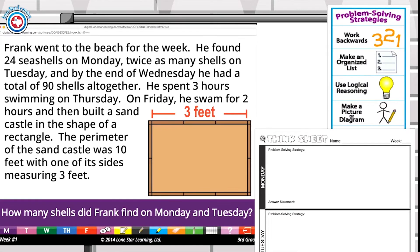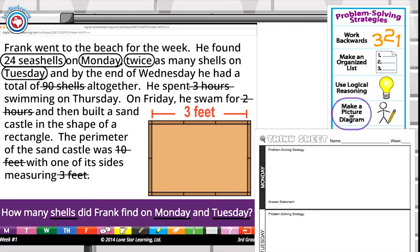The process that has been described here is having students use a plan to solve a problem. They should always read and understand the problem first, then annotate to analyze the problem. Next, they should choose a strategy and use it. Finally, they evaluate their answer and the process that they use to find the answer.